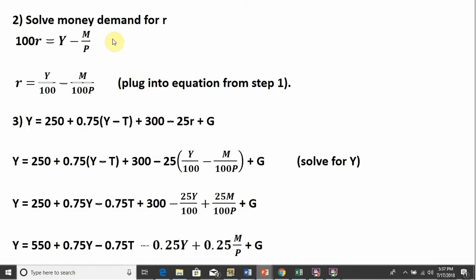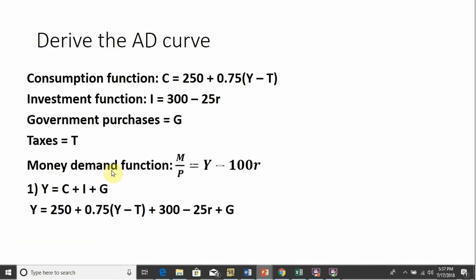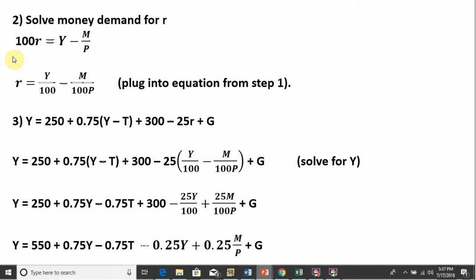Step two, we're going to solve the money demand equation for R. So here's the money demand equation. We're going to solve this for R, the interest rate. So doing that, moving 100R over to the other side and dividing everything through by 100, we have this equation: r equals Y/100 minus M/100P.